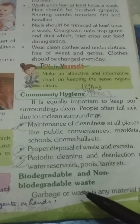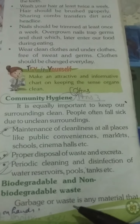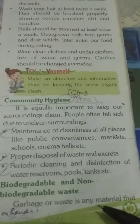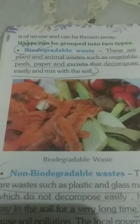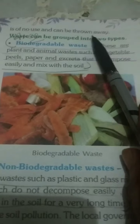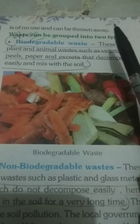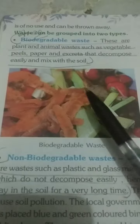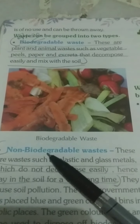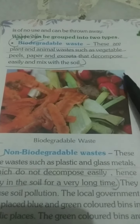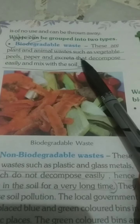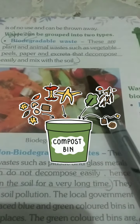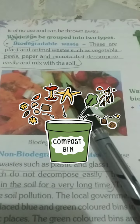Biodegradable and non-biodegradable waste: garbage or waste is any material that is of no use and can be thrown away. Waste can be grouped into two types — biodegradable and non-biodegradable. Biodegradable waste includes plants and animal waste such as vegetable peels, paper, and excreta that decompose easily and mix with soil.